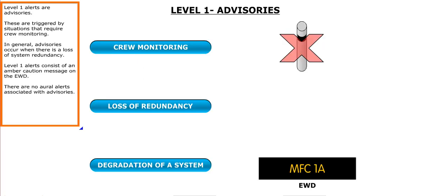Level 1 alerts are advisories. These are triggered by situations that require crew monitoring. In general, advisories occur when there is a loss of system redundancy. Level 1 alerts consist of an amber caution message on the EWD. There are no oral alerts associated with advisories.